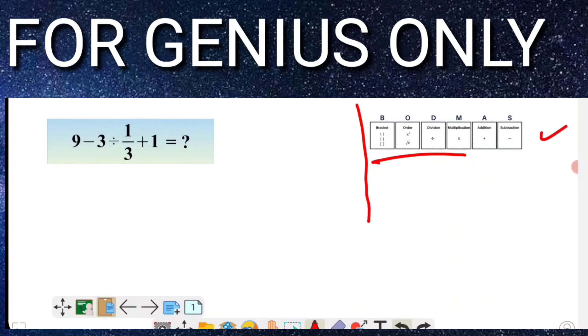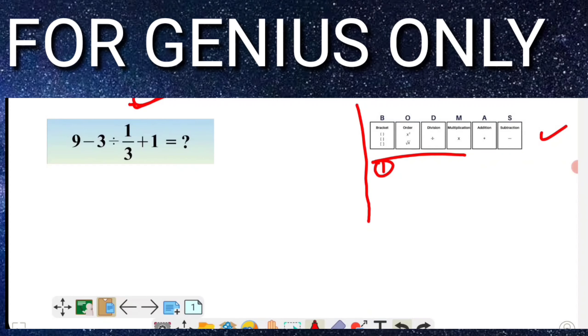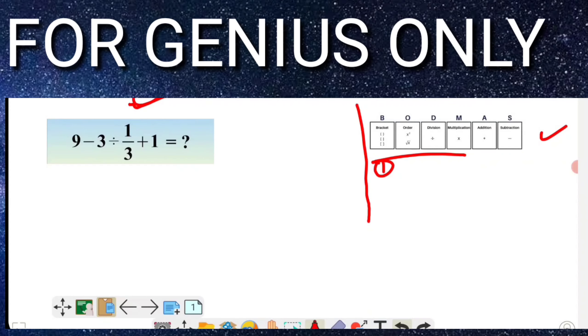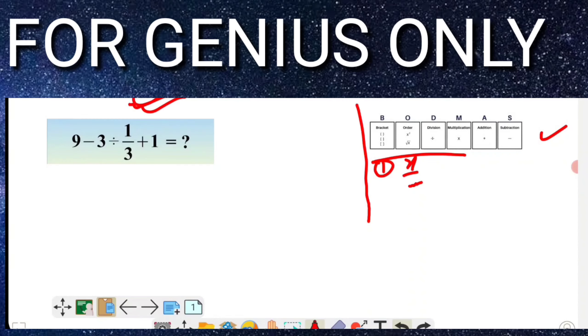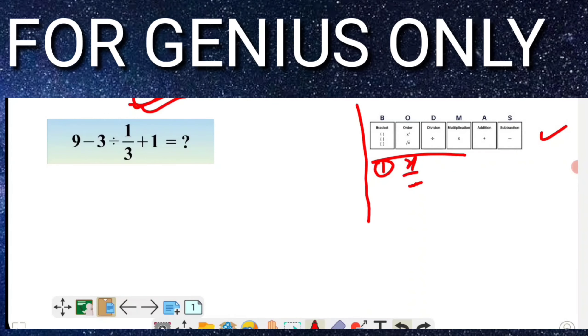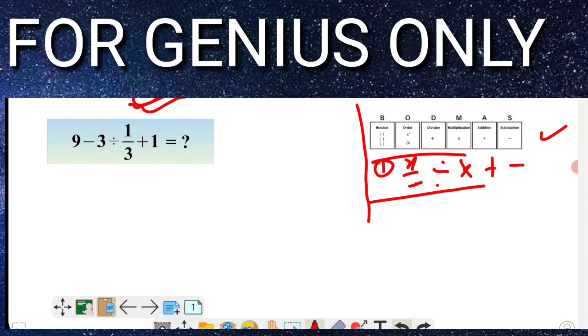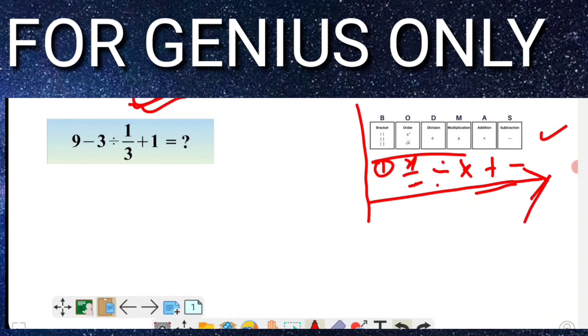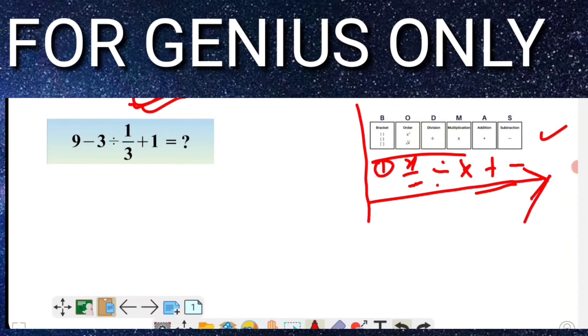Inside the bracket, anything available in this equation we have to solve first because first in BODMAS is bracket. Then, anything with square or under square inside the bracket equation we have to solve second, and after that division, then multiplication, then addition, and last subtraction. We have to follow this sequence only, then we will get the exact answer of this question.